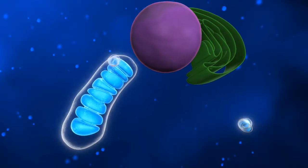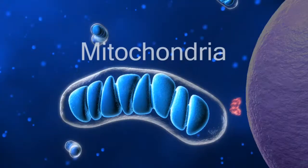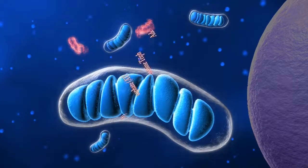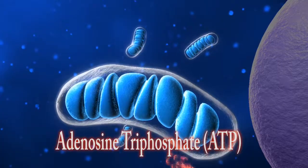At the basic level, all cells in the body have a miniature power plant within, called the mitochondria. This is where our cell's energy is produced. The technical term for this energy is called adenosine triphosphate, or ATP for short.